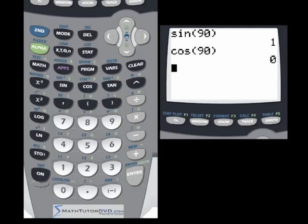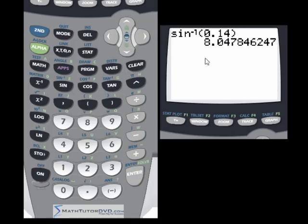Likewise, if we go ahead and take inverse sine, let's say of 0.14 and close it off, inverse sine of that is going to return a number that's in degrees, so eight degrees there. Those of you taking trigonometry or even geometry, certainly on into calculus and stuff, you'll be using these buttons all the time because you're just going to need to do a lot of calculations with sine, cosine, and tangent.